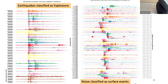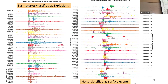These are earthquakes classified as explosions by my model with high probability. And these are events labeled as noise but my model thinks they are surface events — even if they may not be surface events, they are definitely some kind of events other than noise.